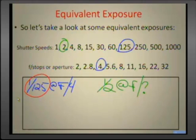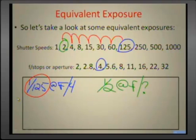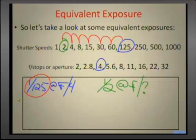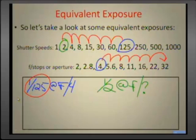I'm at 1/125th at f4 and I've gone to a half a second — let's see: 1, 2, 3, 4, 5, 6 — six shutter speeds slower. The slower the shutter speed, the longer the shutter is open, so I have to cut down the amount of light. Closing down a lens means going to a larger f-number. So closing six stops from f4: 1, 2, 3, 4, 5, 6 — I would have to use f32 to keep these exposures equal.